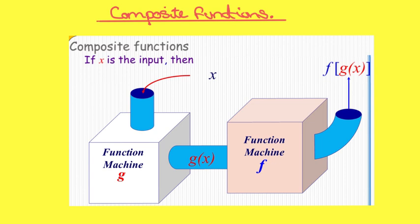Composite functions. If x is the input, then x goes into function machine g and out comes g of x. g of x then goes into function machine f and out comes f of g of x.